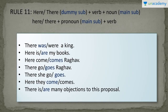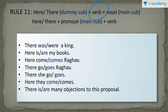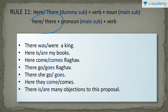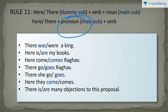The next rule is about 'here' and 'there.' Whenever a sentence starts with 'here' or 'there,' these words act as a dummy subject. Since it is a dummy subject, not the main subject, it is not going to affect the verb. The main subject in such sentences is the noun or pronoun which follows 'here' or 'there.' There are two different constructions: if you use a noun, the noun comes only after the verb. If you use a pronoun, the pronoun comes first and then the verb.